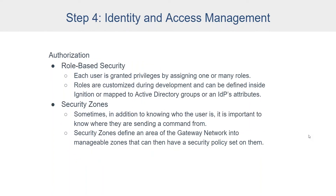Now that you're logged in and authenticated, it's time for authorization. Each user is granted privileges through the assignment of roles or security levels. Roles are customized during development and can be defined inside Ignition or mapped to Active Directory groups or an IDP's attributes. In addition to knowing who the user is, it's important to know where they're sending a command from. Security zones define areas of the network into manageable zones with a security policy. A user logging in right next to a piece of equipment may have read-write control, but if they log in from their desk at a different IP address, they get a different level of access — even if it's the same user with the same roles.